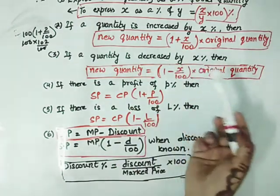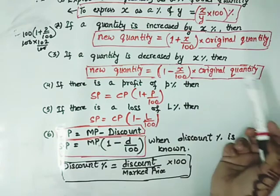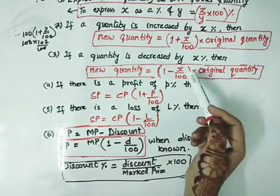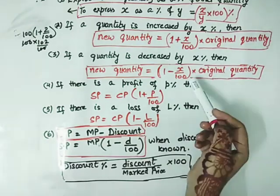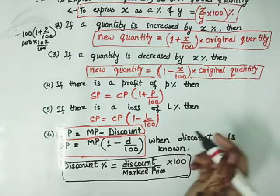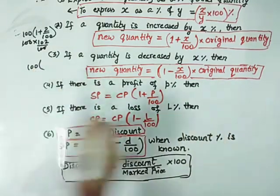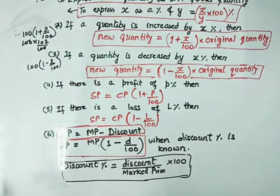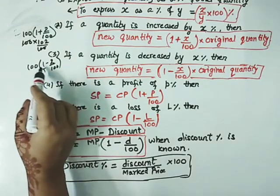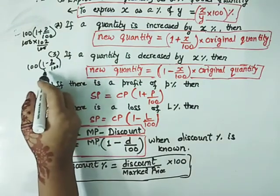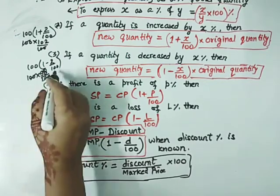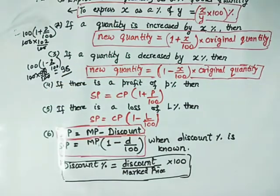और अगर quantity decrease करेगी, so new quantity = (1 minus x upon 100) into original quantity. वही example लें — 100 का 2% decrease: 100 में से 2 minus करोगे, so 98 देगा। Formula से भी: 100 into (1 minus 2 by 100) = 100 into 98 by 100 = 98 मिल जाएगा।